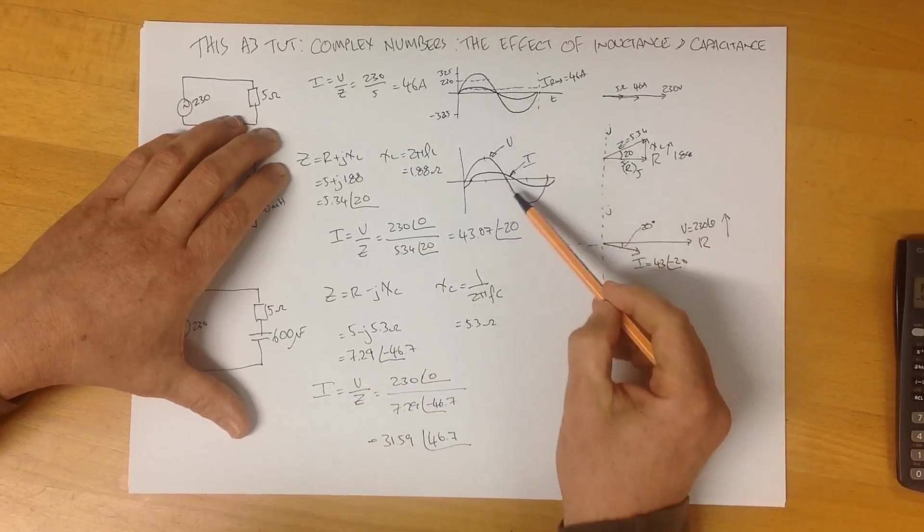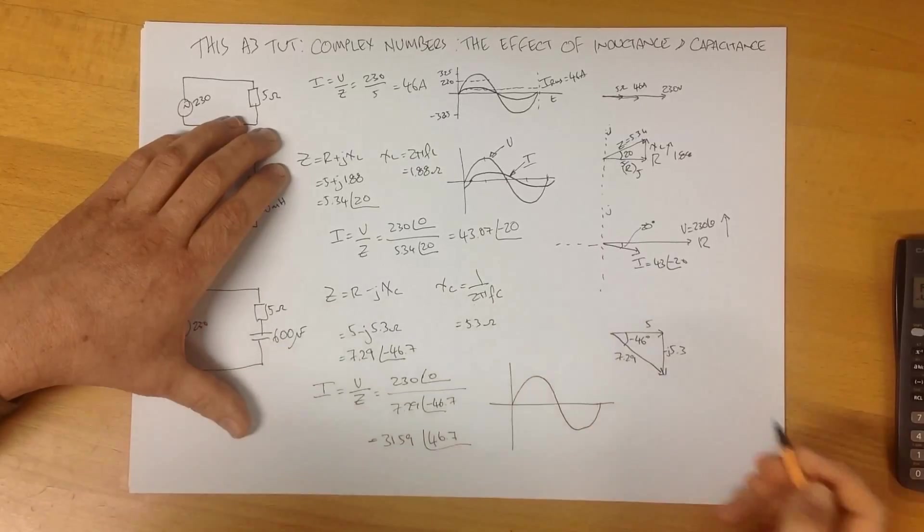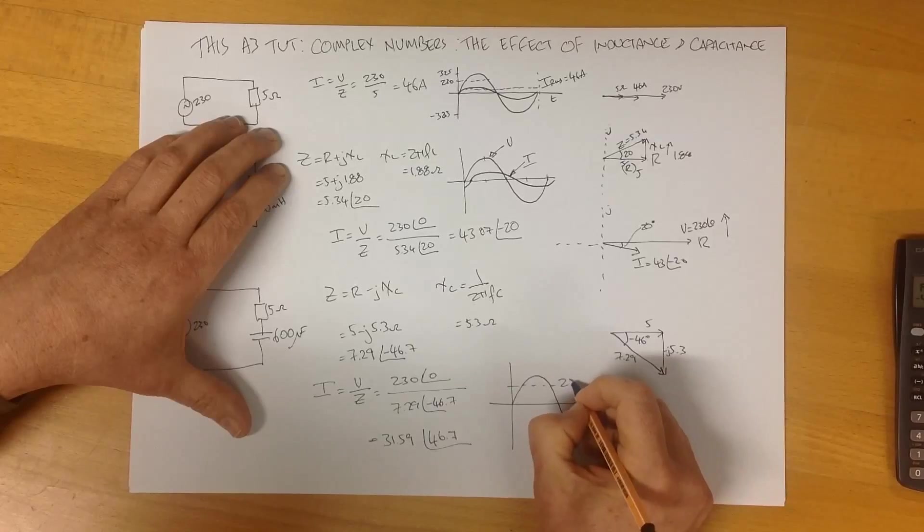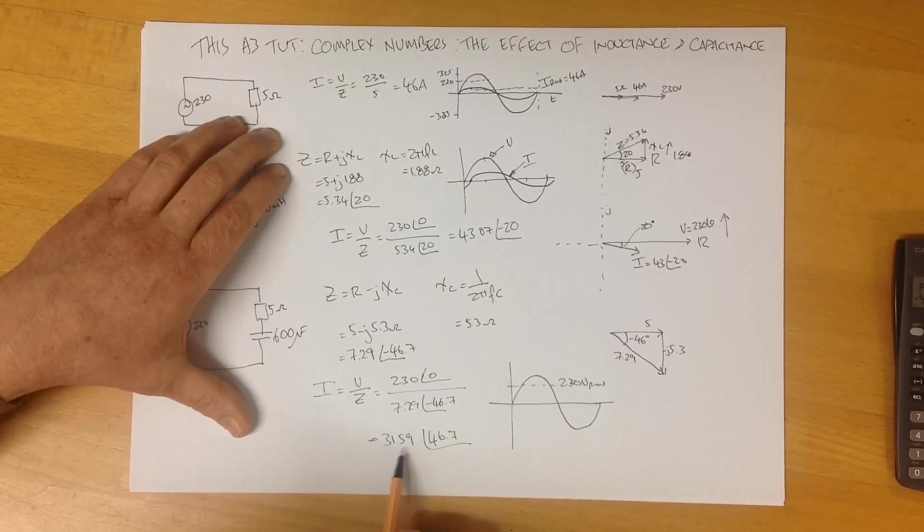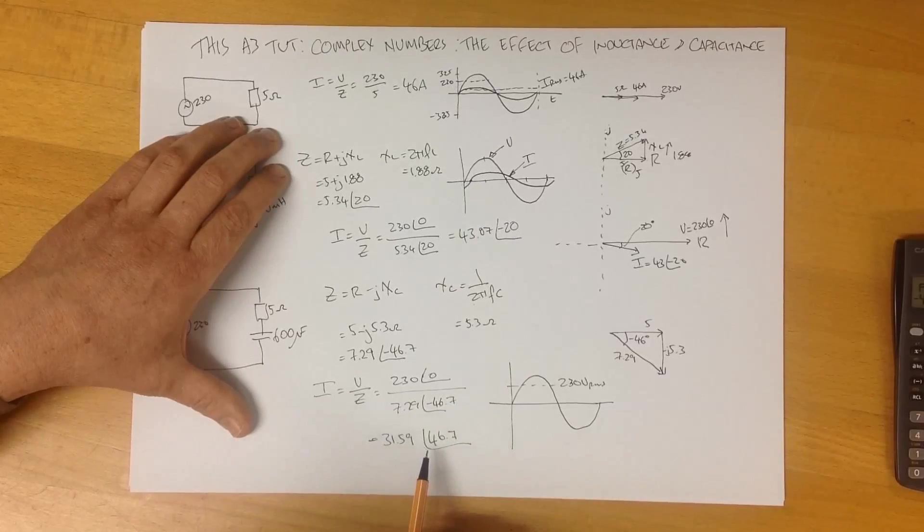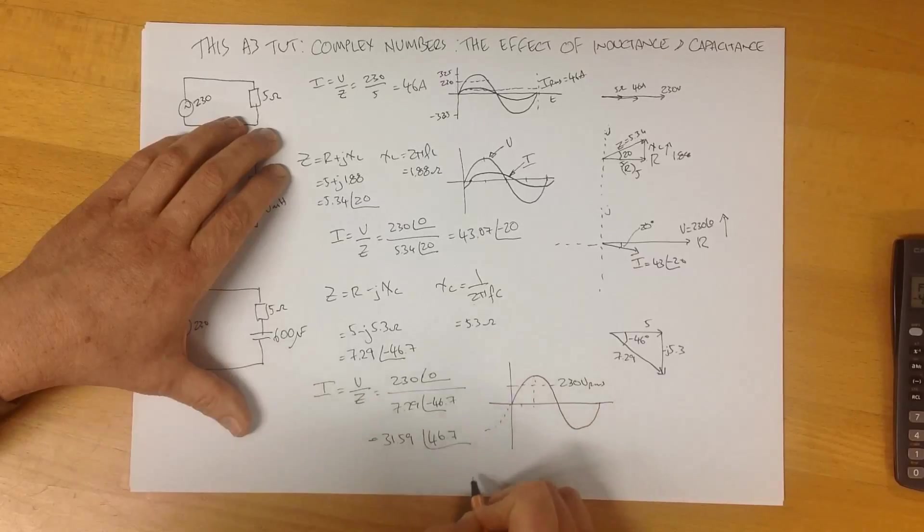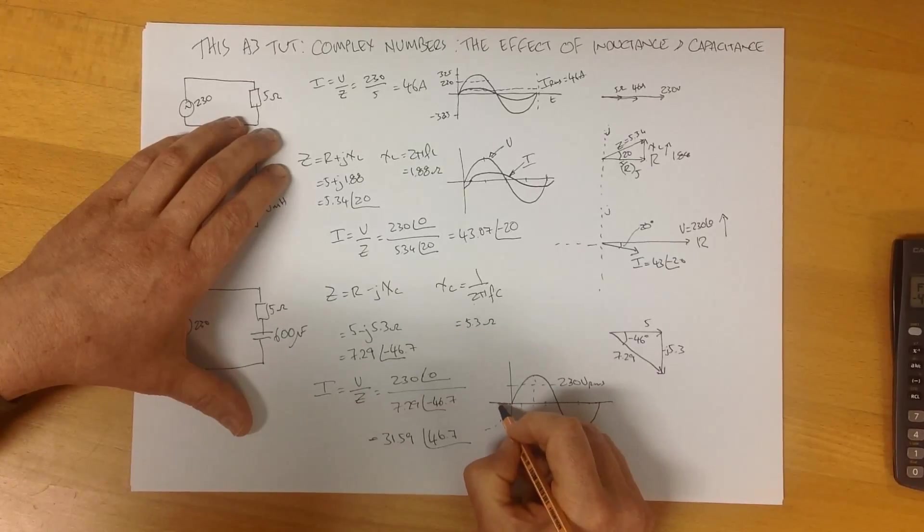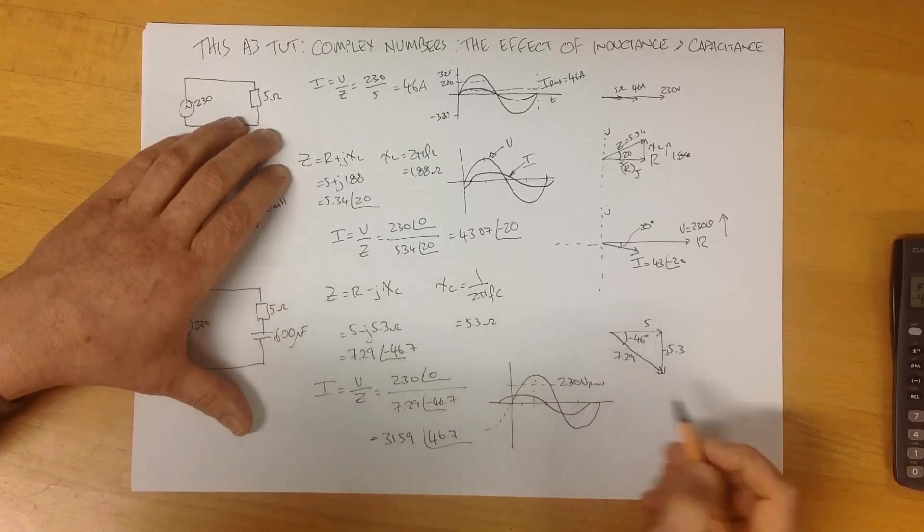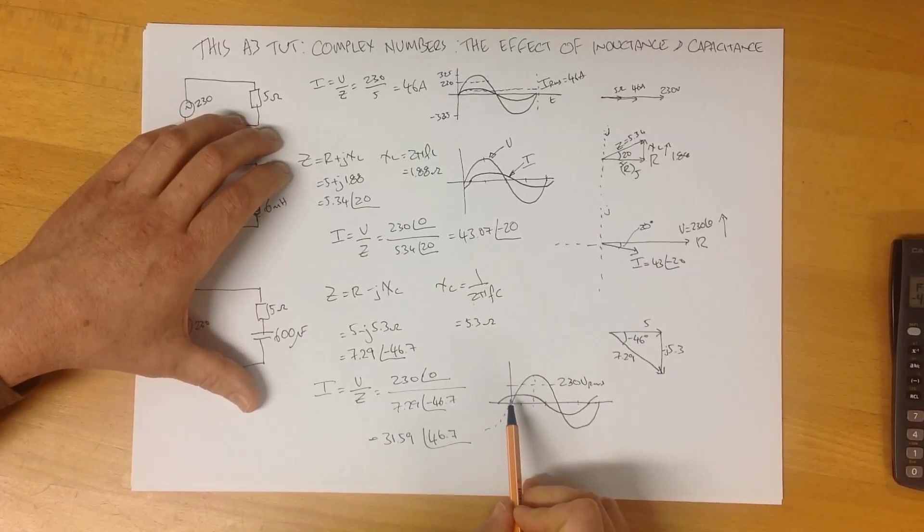We can again do our voltage and current in the time domain. Here we are here. Here's our voltage. 230 volts RMS. Our current, we've calculated to have a magnitude of 31.59 RMS. And this current leads by 46 degrees. So here we are here. There's 90. That would be lagging by 45 degrees there. We're going to lead it. We have to lead it. So our current is going to be like this. If you were to look at on the oscilloscope, this is what you would see. You would see that the current in the time domain leads the voltage.